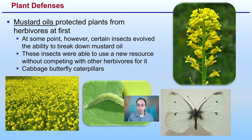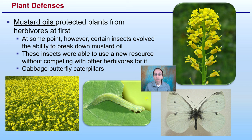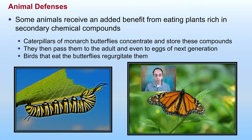These plant defenses — these mustard oils — protect plants from herbivores, at least at first. However, some insects have evolved to be able to break down the mustard oil, and these insects were able to use this new resource without competing with other herbivores for it. A great example of this is the cabbage butterfly caterpillar, which consumes the mustard plant without competition because other insects haven't evolved to combat that mustard oil.